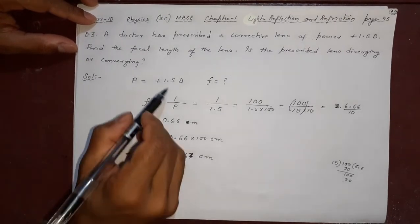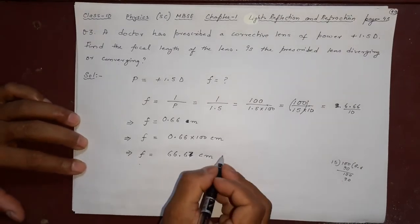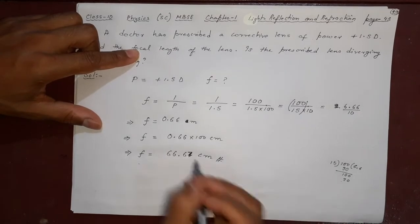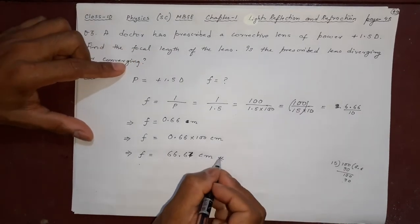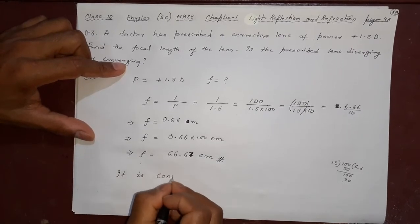Is there a negative sign? No, there is a plus sign. From the plus sign, what more information will you get? Focal length is 66.67 or simply 67 is the answer. It is converging.